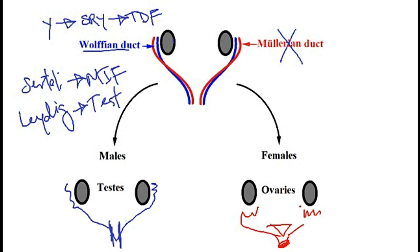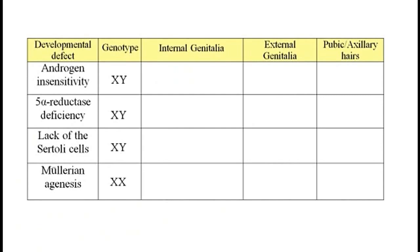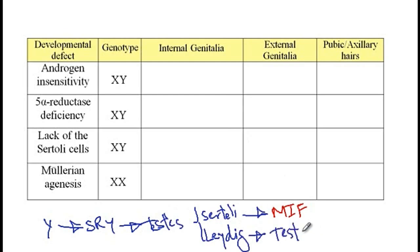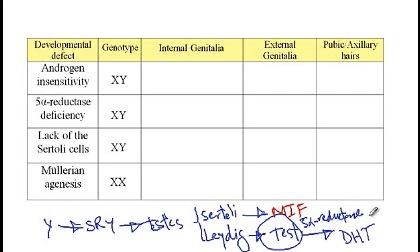Now let's go back to the table and discuss the types of symptoms that can develop from each of these developmental defects. To summarize: if the patient is male, they have the SRY gene and produce testes with Sertoli cells — which produce Müllerian inhibiting factor — and Leydig cells, which produce testosterone that helps form the male internal genitalia. Then via 5-alpha reductase, testosterone is converted into dihydrotestosterone (DHT), a much more potent form of testosterone that helps develop the male external genitalia.